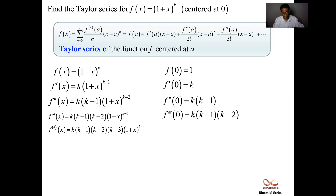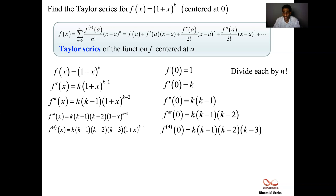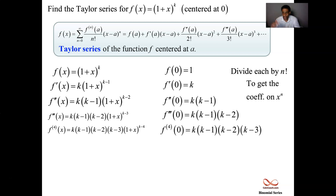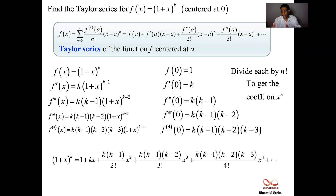We're getting the coefficient part: k, k minus 1, k minus 2 in the third term, and k, k minus 1, k minus 2, k minus 3 in the fourth. These are just the numerators of each of the individual coefficients. We then divide by n factorial — 0 factorial is defined to be 1, then 1 factorial, 2 factorial, and so on. These become the coefficients on x to the n. So the series is: 1 + kx + k(k−1)/2! · x² + k(k−1)(k−2)/3! · x³ and so on.